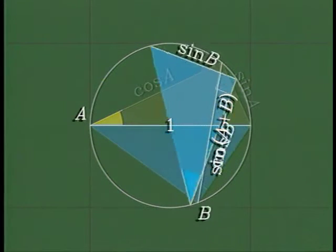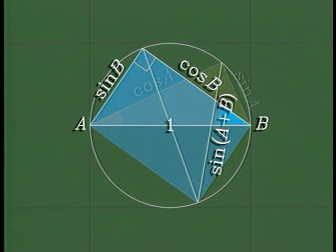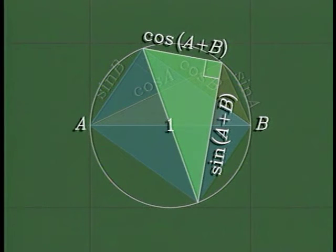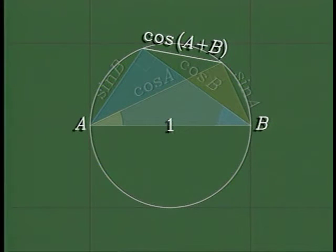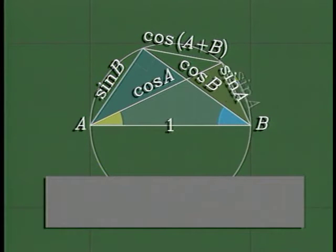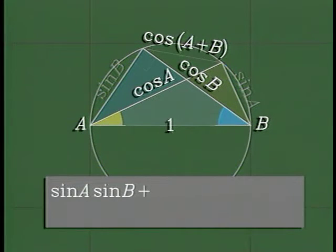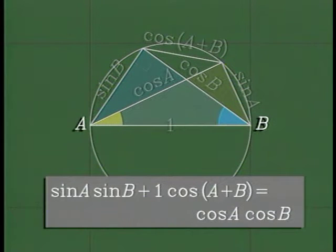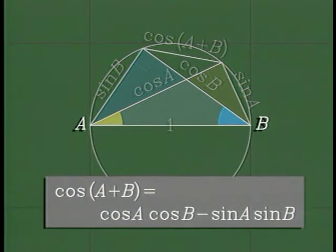To get an addition formula for cosines, first rotate this right triangle 180 degrees so this diagonal is a diameter, and this triangle is a right triangle. The length of this leg is the sine of A plus B, so the length of this one must be the cosine of A plus B. Again, we have a quadrilateral inscribed in a circle, so we can apply Ptolemy's theorem. The result is the addition formula for cosines: the cosine of A plus B equals cosine A times cosine B minus sine A times sine B.